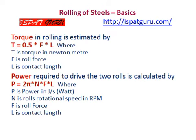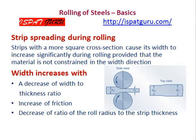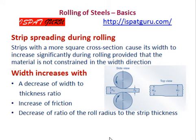A strip with a smaller cross-section draws its width to increase significantly during rolling, provided that the material is not constrained in the width direction. Width increase occurs with a decrease of the width-to-thickness ratio, an increase of friction, and a decrease of the ratio of roll radius to strip thickness.